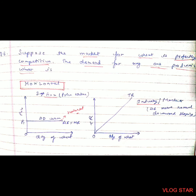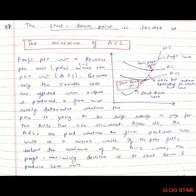Question 7: The shutdown point is located at the minimum of AVC (average variable cost). The shutdown point is the point when marginal cost becomes less than the average variable cost. A firm shuts down when it cannot recover even the making cost of the product — when the price received from selling is less than what was spent making it. The shutdown zone is where MC goes below average variable cost. When MC equals AC, it is the point of zero profit, but at least the firm can recover its making cost.